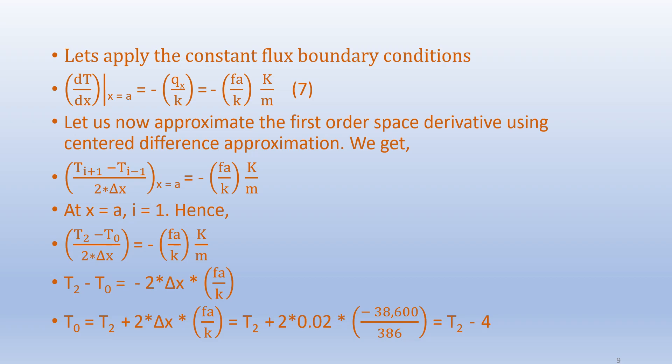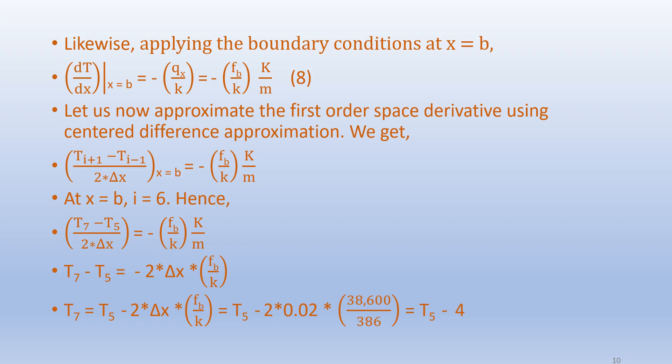Approximating the first-order space derivative using a centered difference: (T_(i+1) − T_(i-1))/(2Δx) = −F_A/K. At x = A, i = 1, so we get (T_2 − T_0)/(2Δx) = −F_A/K. Rearranging: T_0 = T_2 + 2·Δx·F_A/K. Likewise, applying the boundary condition at node x = B, we get: T_7 = T_5 − 2·Δx·F_B/K.